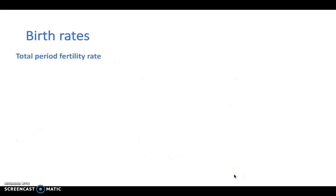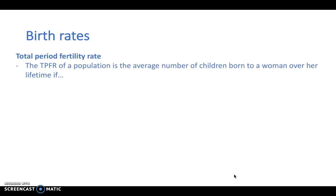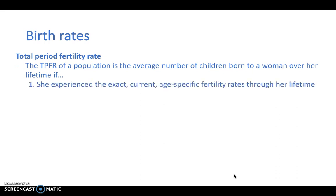Another rate to be aware of is the total period fertility rate. This is the average number of children born to a woman over her lifetime if she experienced the exact current age-specific fertility rates through her lifetime — i.e. she was able to give birth between the ages of 15 and 44 and she were to survive for all her reproductive years, so from 15 to 44.